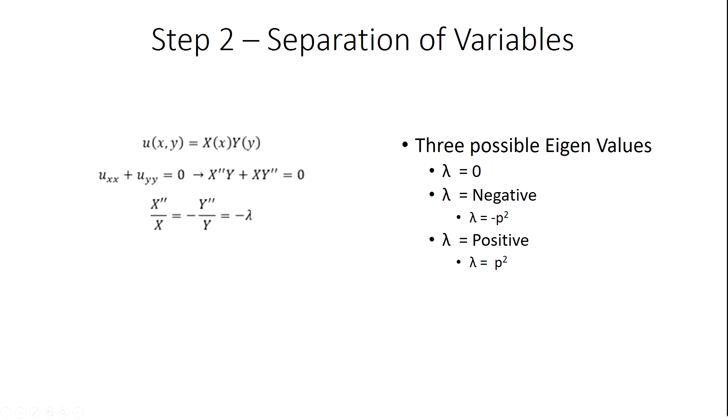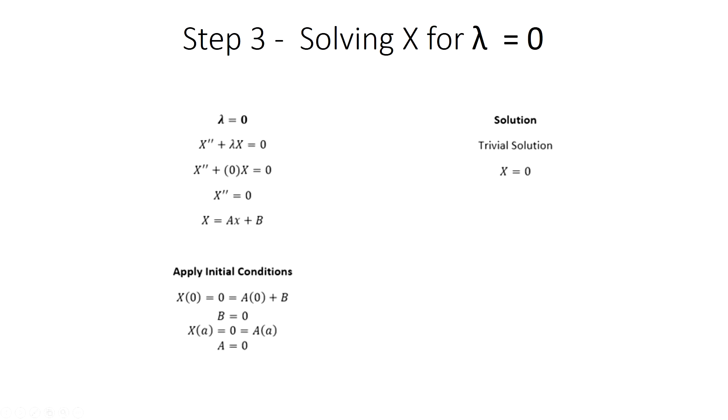There are three possible values for the constant of separation, lambda, that all must be checked in order to see if they are part of the final solution for the equation. These are the cases when lambda is negative, equal to zero, or positive. For the positive and negative cases, p squared is used to simplify the solution for the eigenvalues.